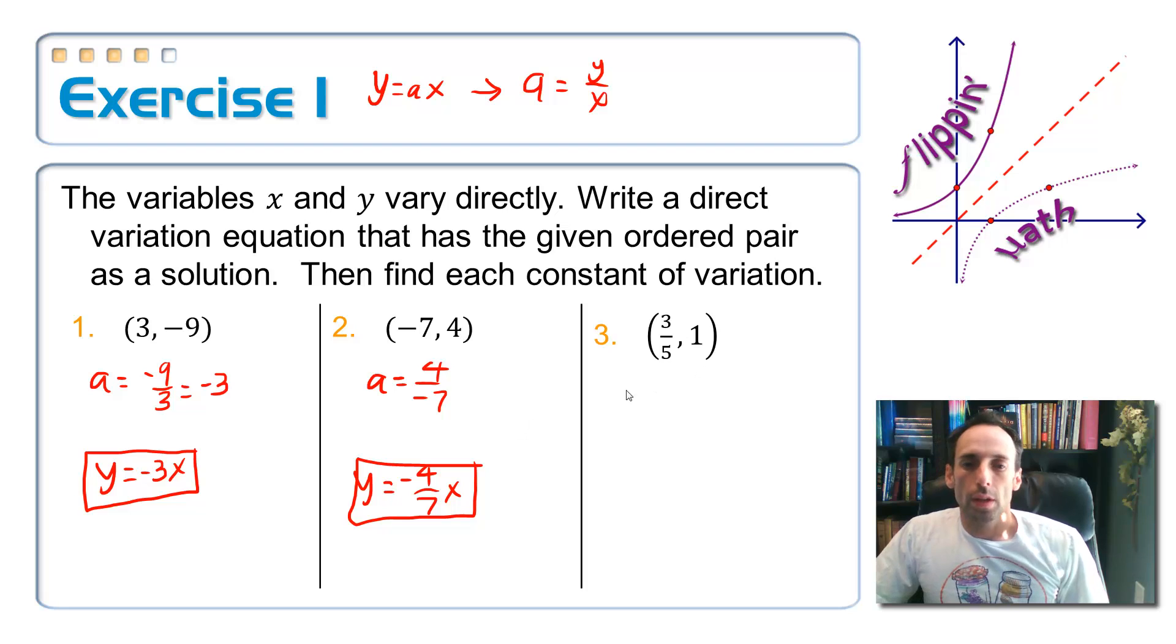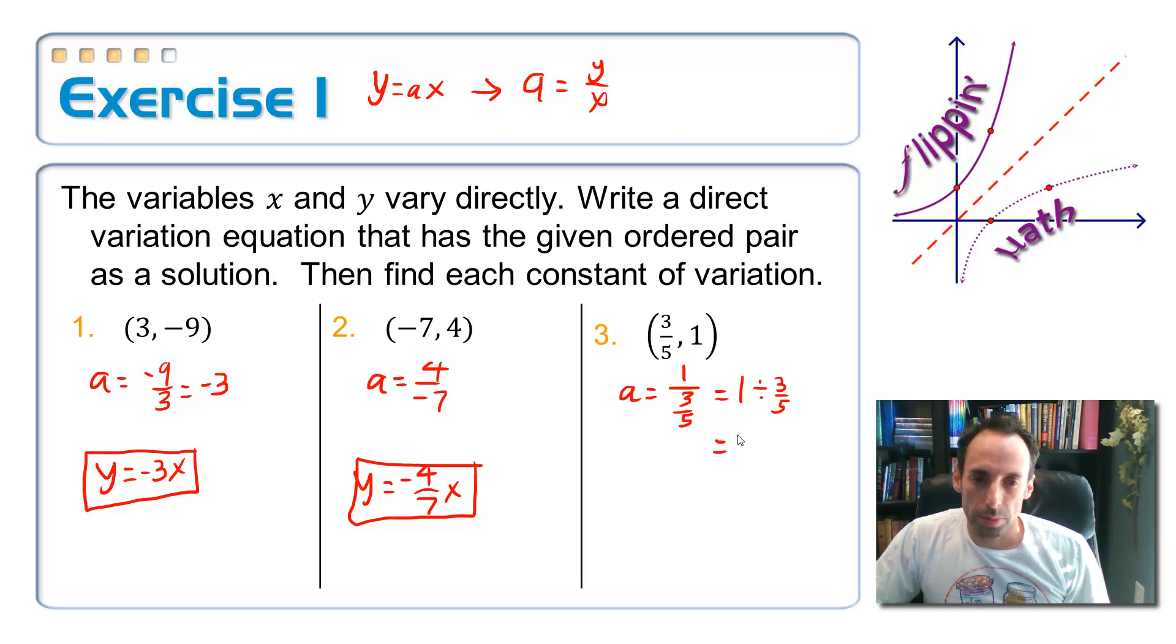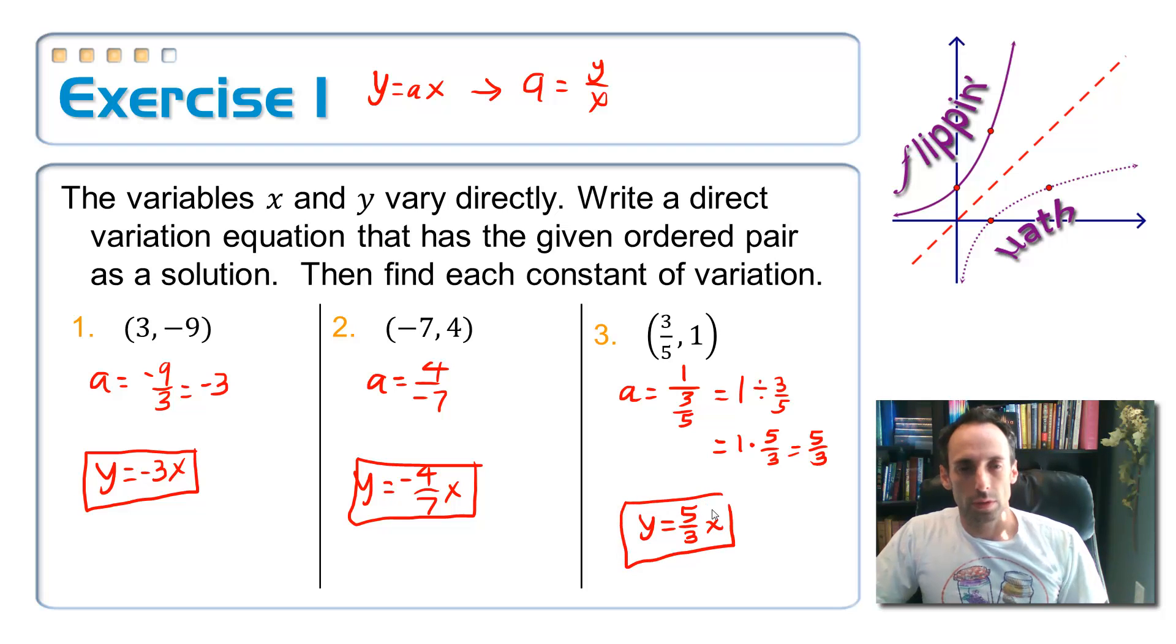Okay, slightly more challenging. On number 3, the y coordinate over the x coordinate, 1 over 3 fifths. 1 divided by 3 fifths. This is what's called a complex fraction, a fraction within a fraction. So let's turn this into a division problem. 1 divided by 3 fifths. When I divide by a fraction, that's the same thing as multiplying by the reciprocal. So this becomes 1 times 5 thirds, which is 5 thirds. So my equation is y equals 5 thirds x. And that's it. It's that simple.